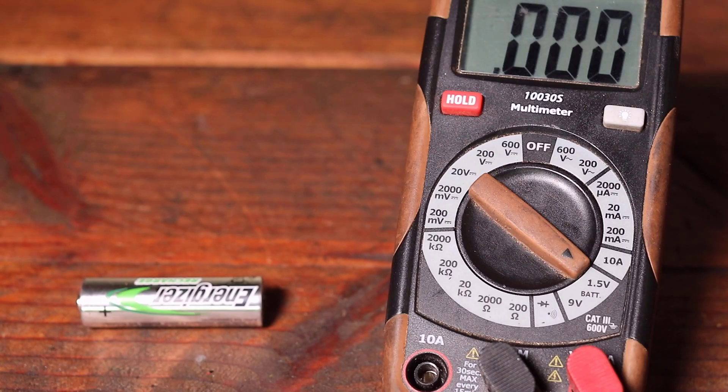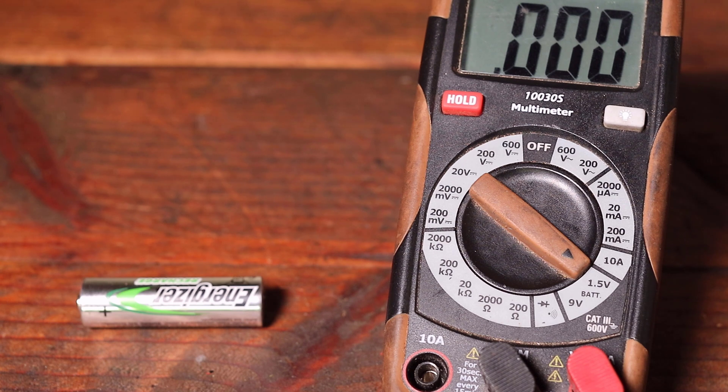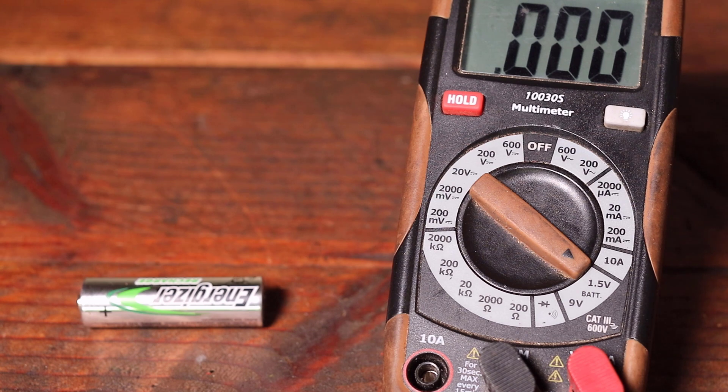Voltage is the difference in the electrical potential between two points in a circuit measured in volts. Voltage can also be described as potential difference, electromotive force and electric pressure. You can also measure voltage with a multimeter.